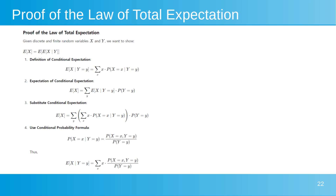The law of total expectation states that you can calculate the expected value of random variable X using conditional expectations. The overall expected value E(X) is the average of the conditional expectations E(X|Y), weighted by the probabilities of Y. In formula terms, E(X) = E[E(X|Y)]. This means you can break down the expectation into parts based on different conditions and then average those parts.